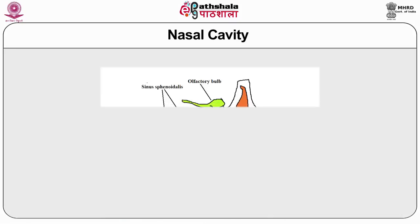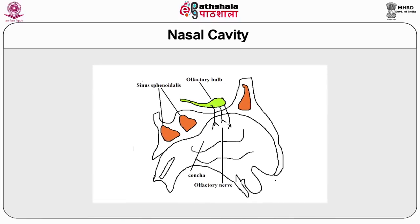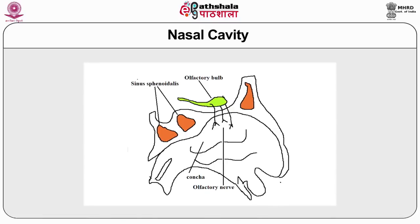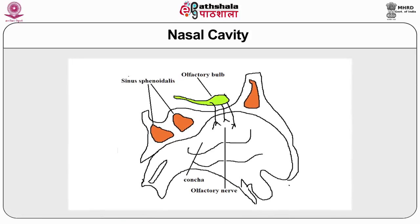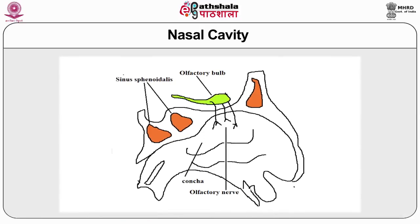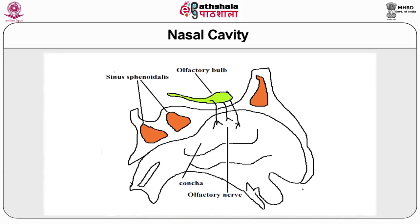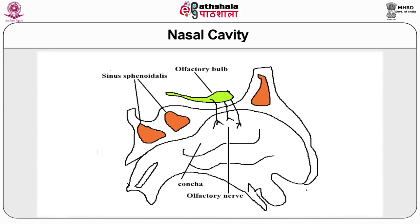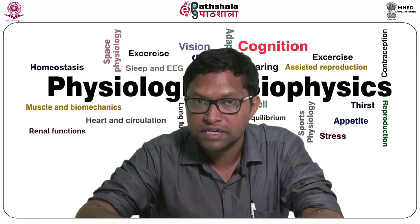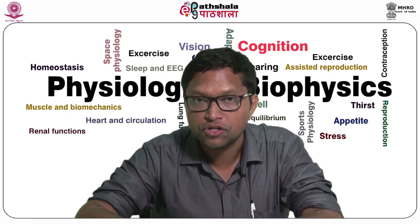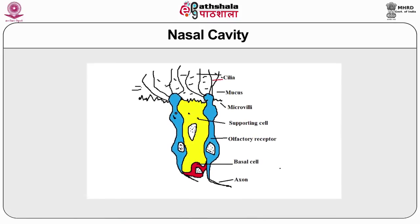The nasal cavity is divided into right and left halves by a cartilaginous septum. At the roof of the nasal cavity and near the septum there is an area of olfactory epithelium consisting of olfactory sensory neurons. The rest of the nasal mucosa has a respiratory function and responds to strong irritants by sneezing or lacrimation, mainly due to the presence of trigeminal nerve endings.